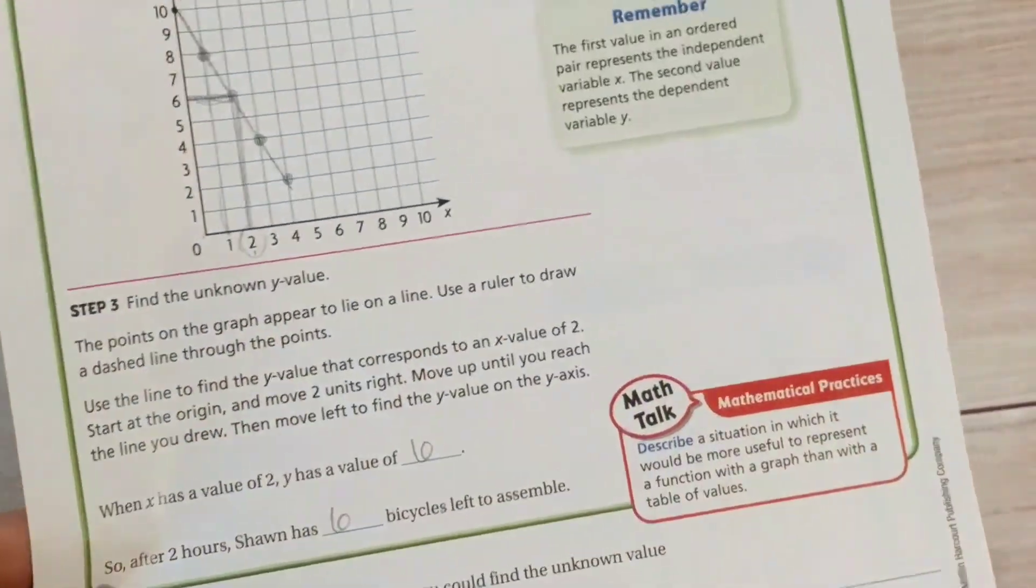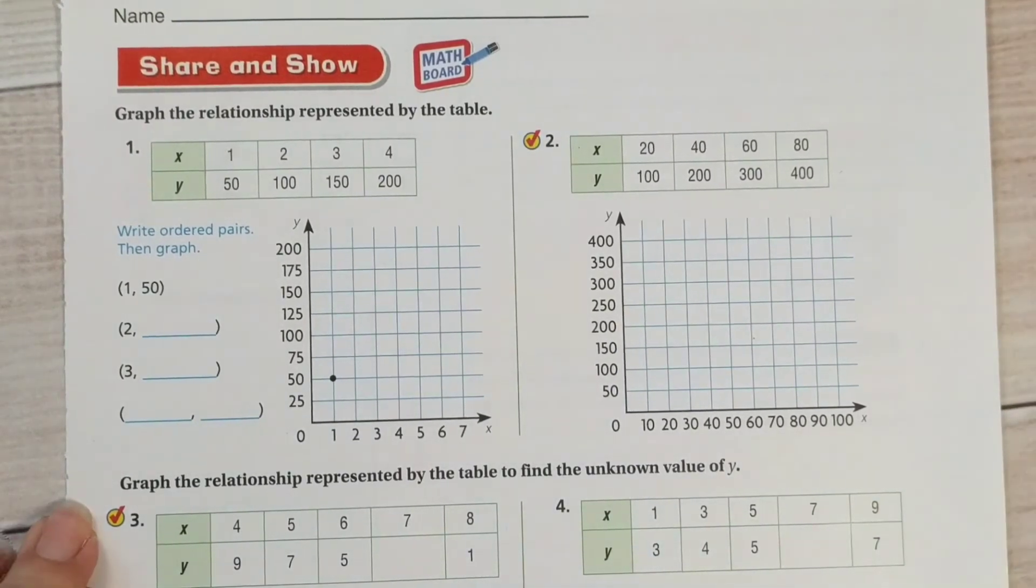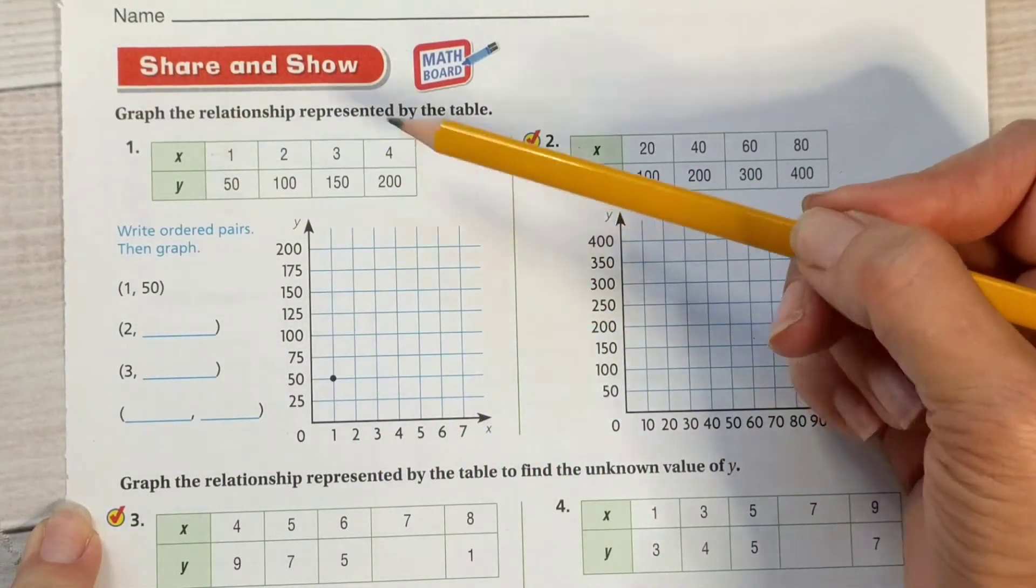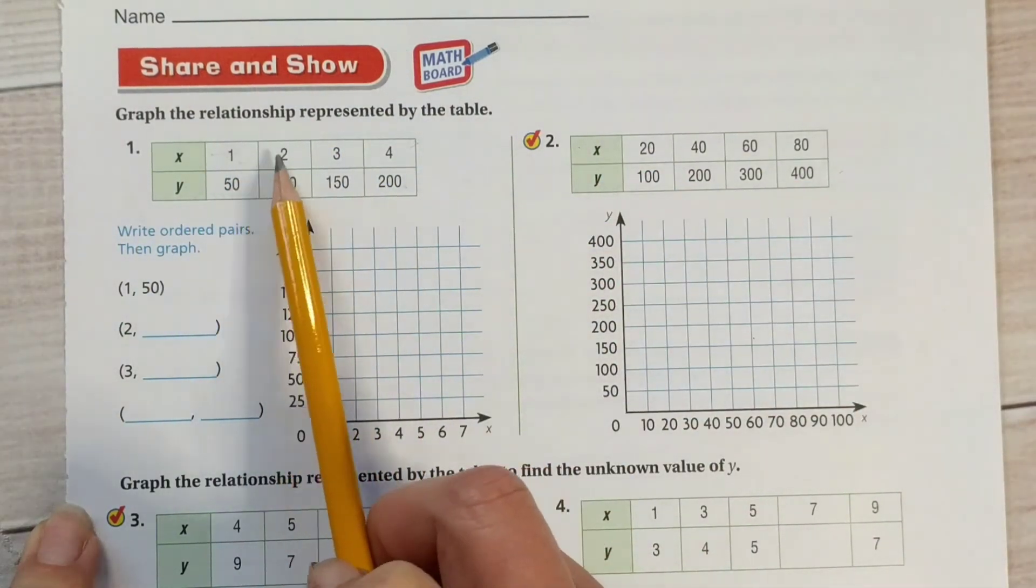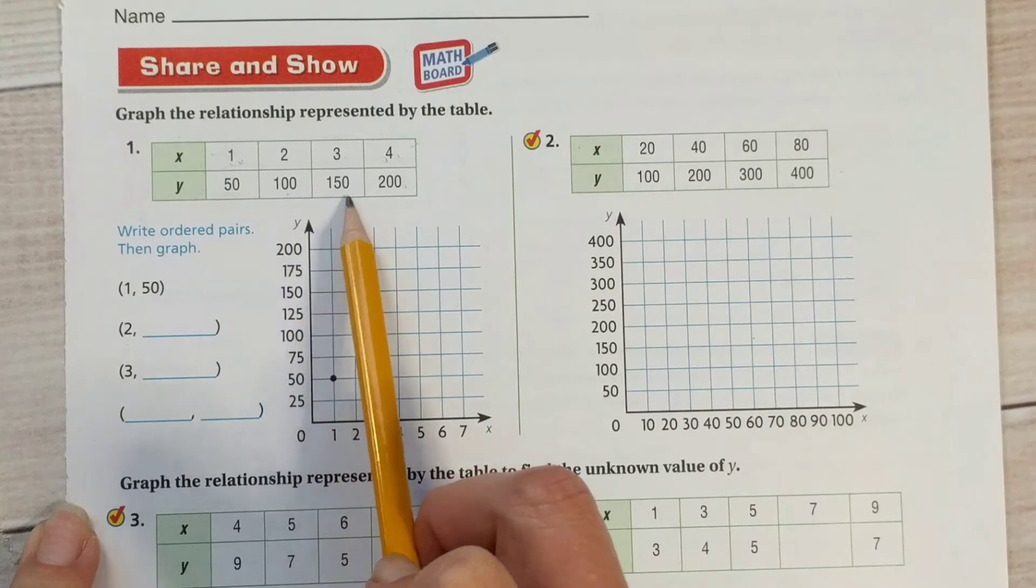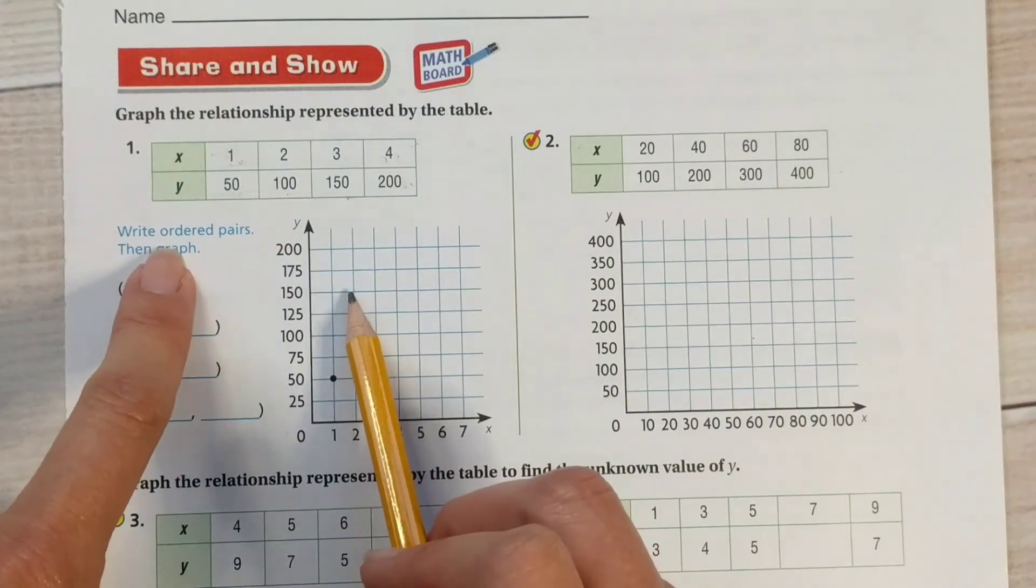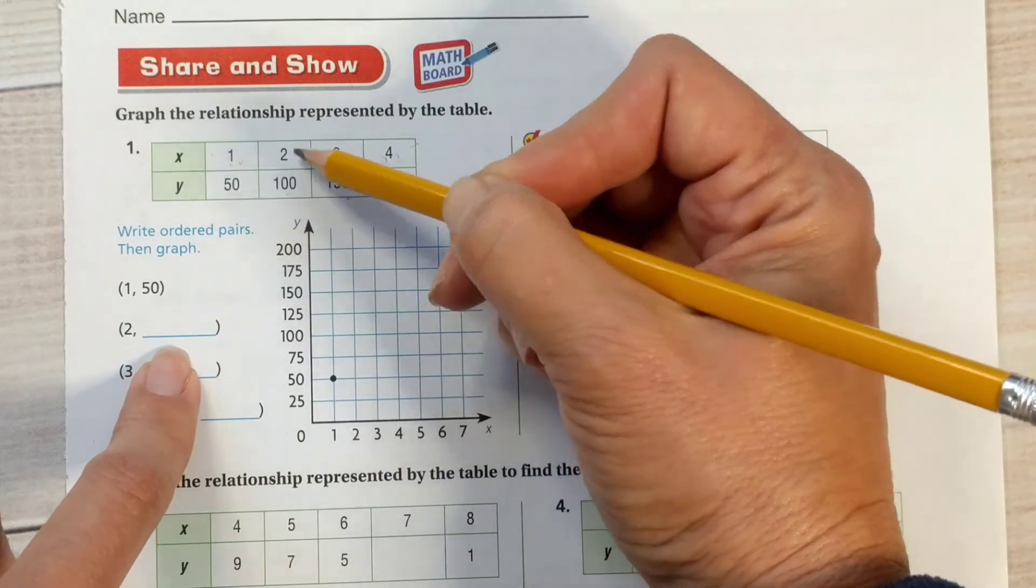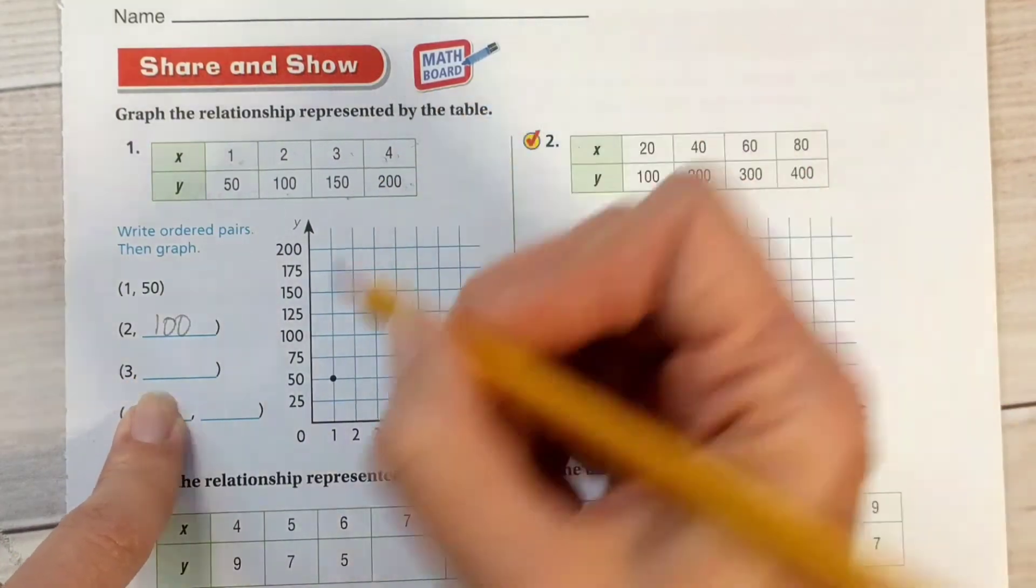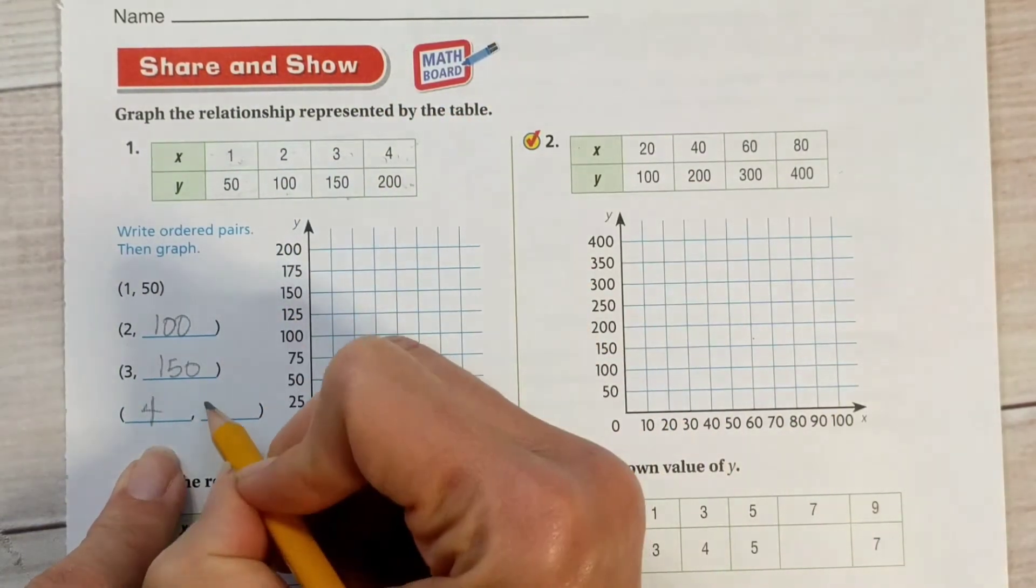Okay, here we go. Graph the relationship represented in the table. I'm on page 373. So here is our independent variable line in the table. Here is our dependent variable line in the table. We have one, or our count-bys are 1, 2, 3, 4, so they're count by 1. Down here we have 50, 100, 150, 200, so we're increasing by 50s. Write the ordered pairs. So at 1 we have 50. At 2 we have 100. At 3 we have 150. At 4 we have 200, so 4, 200. Remember, the x value always has to be first in an ordered pair. The y value always has to be second.